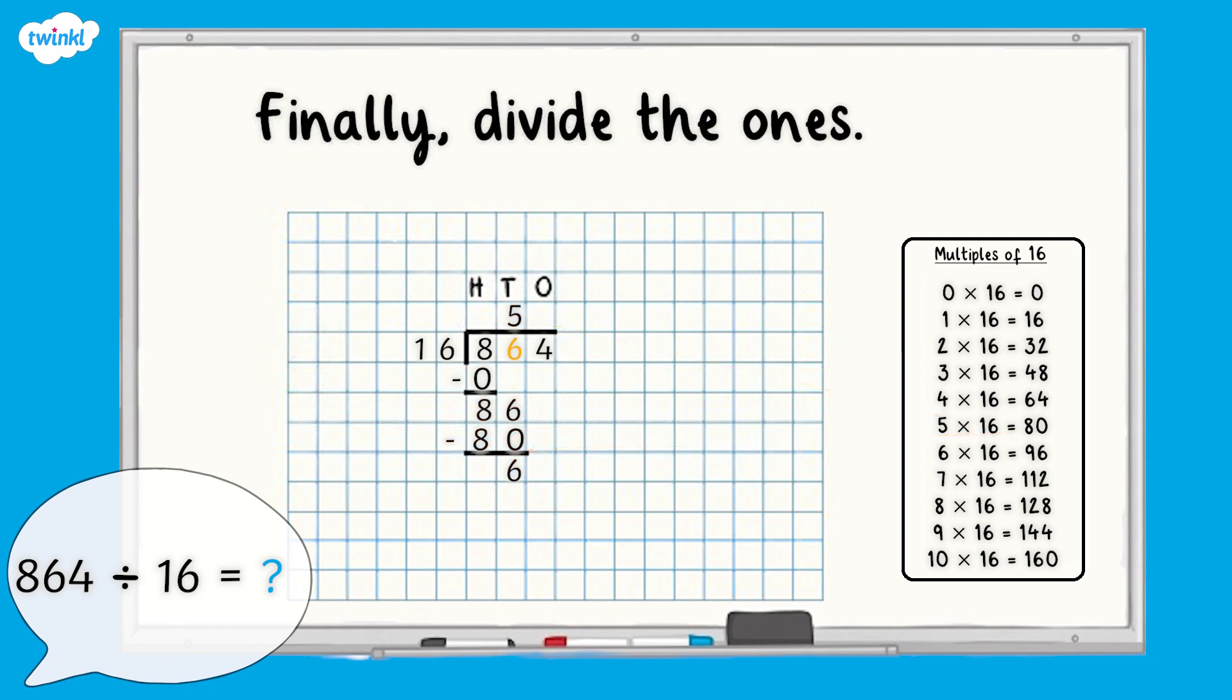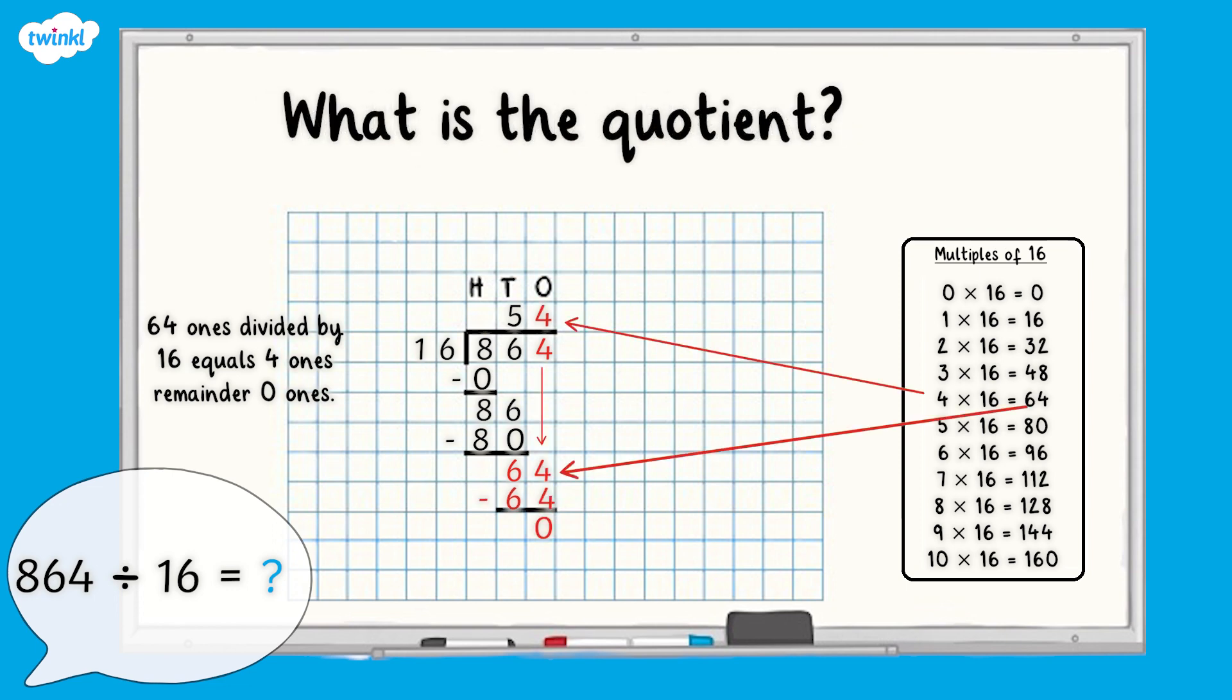And finally divide the ones. Pause here to complete this step. 64 ones divided by 16 equals 4 ones remainder 0 ones. What is our answer or quotient when 864 is divided by 16?